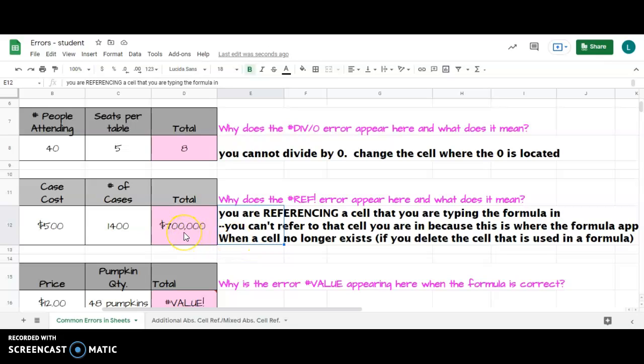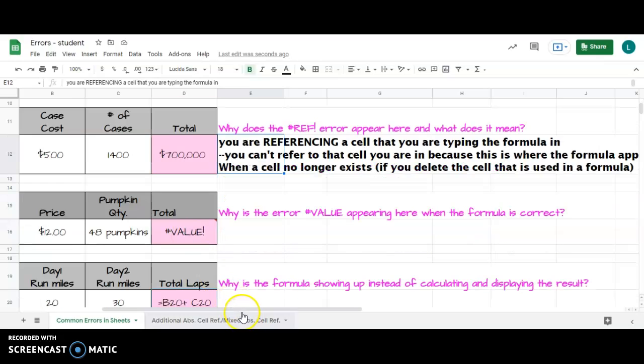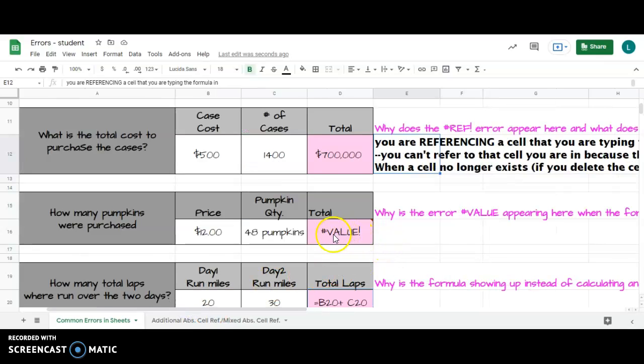Moving down, VALUE. If I notice B16 times C16, I'm thinking my price times my quantity. So when I hit enter, why is it saying VALUE?